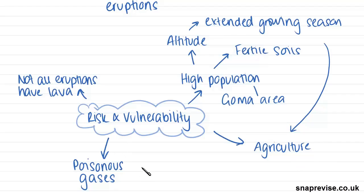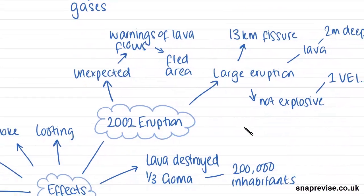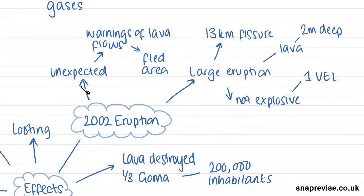Also, the volcano tends to produce a lot of poisonous gases when it erupts, so that's one big risk. Another risk is that people are also attracted to living in this area because there are lots of eruptions, but not all of them have lava flows. So people tend to think that they're quite safe and the volcano is not going to properly erupt and produce lava. So in 2002, there was a very unexpected volcanic eruption, and there was a warning of the lava flows, and this enabled people to flee the area prior to the volcanic eruption actually taking place.